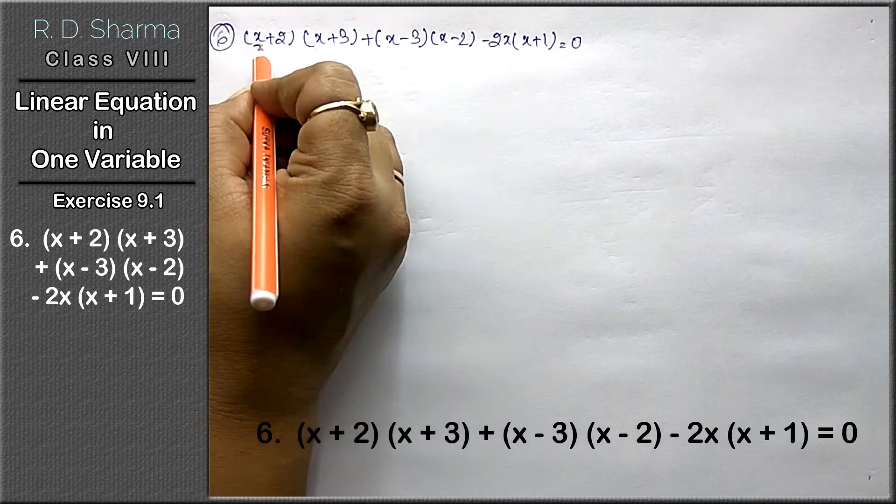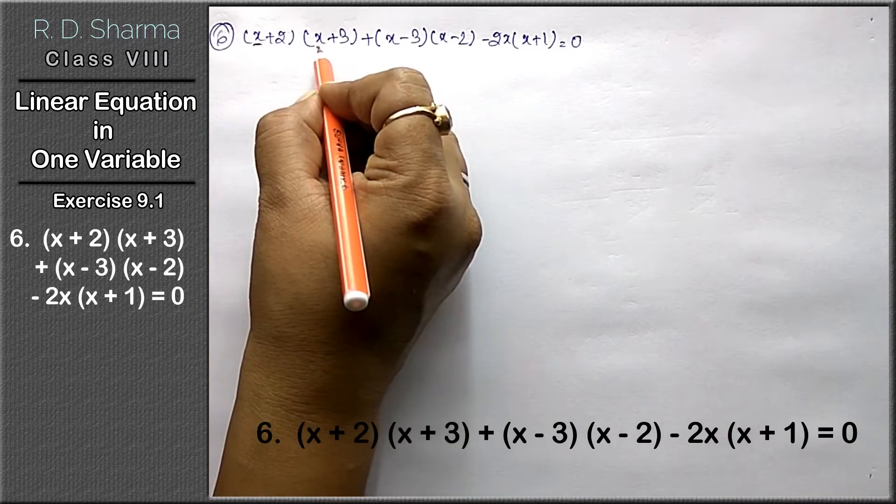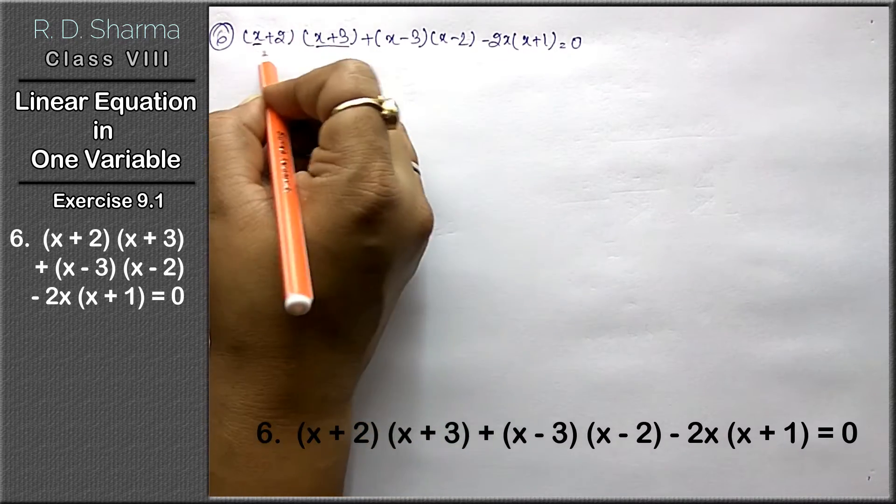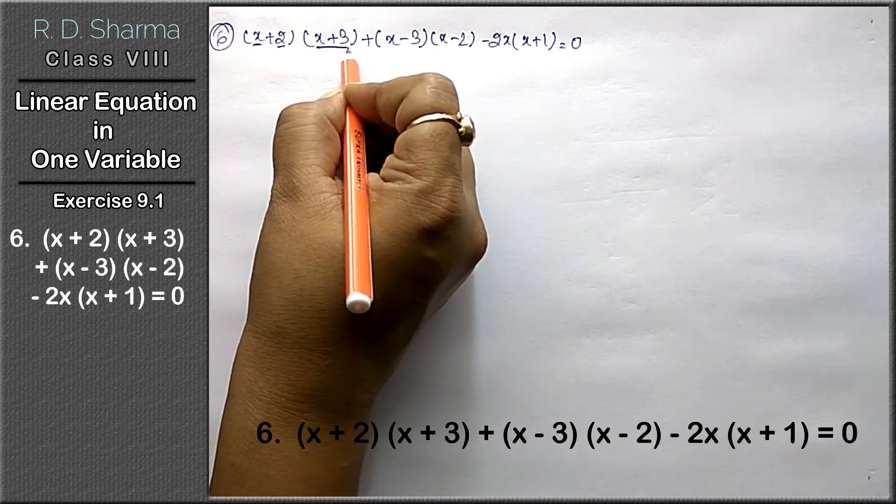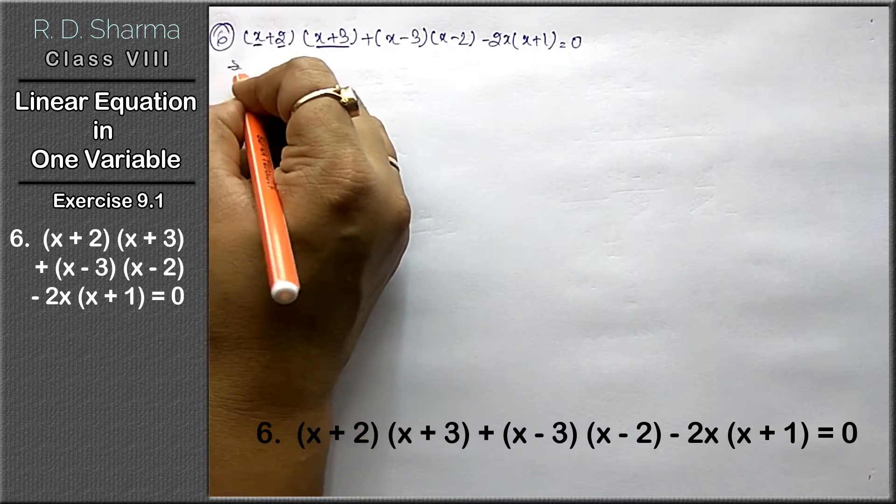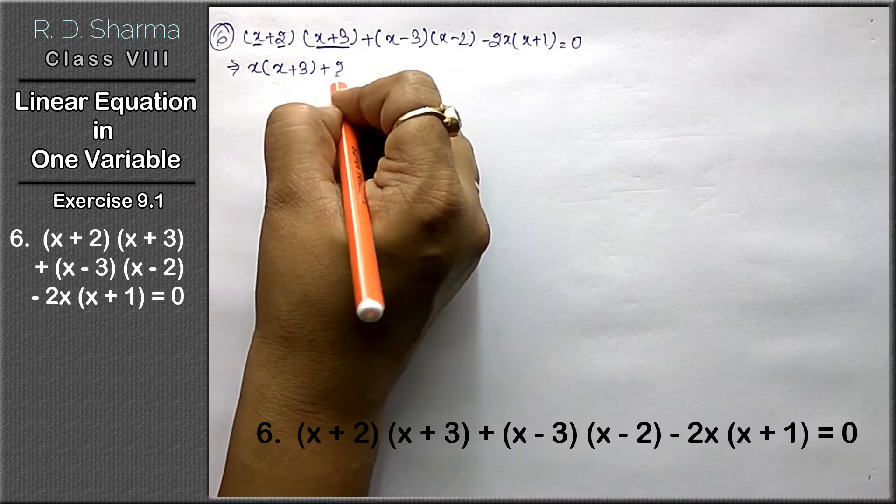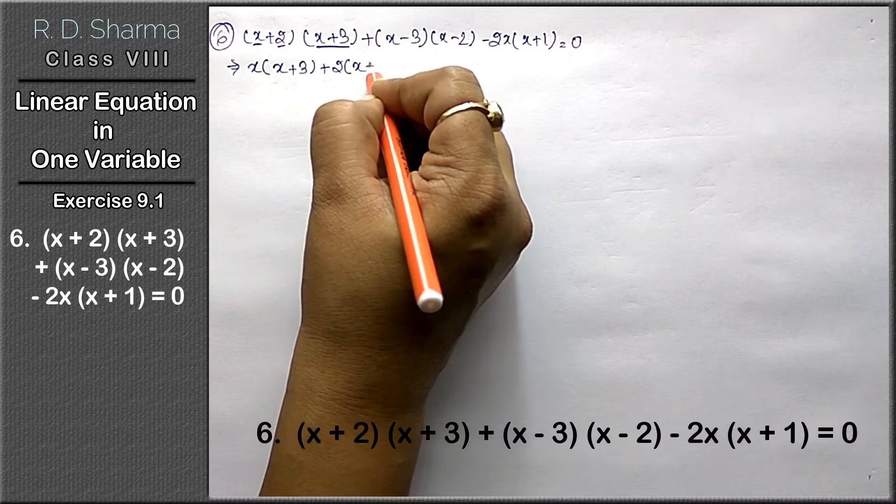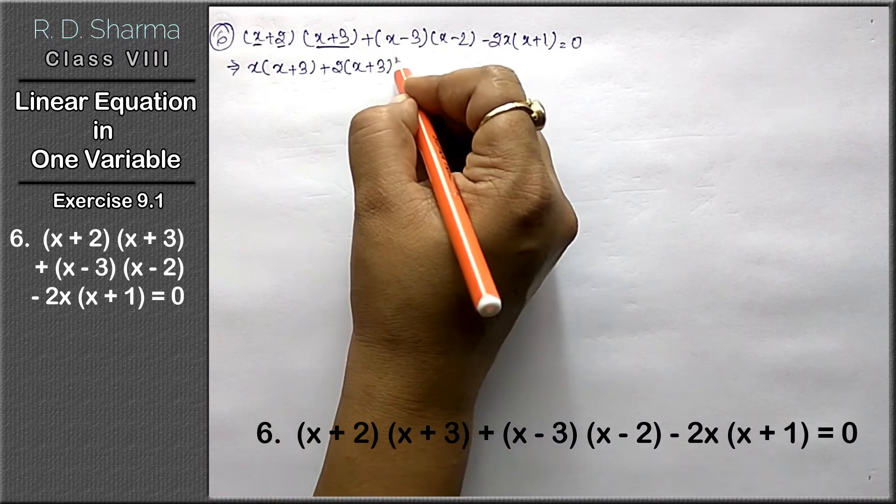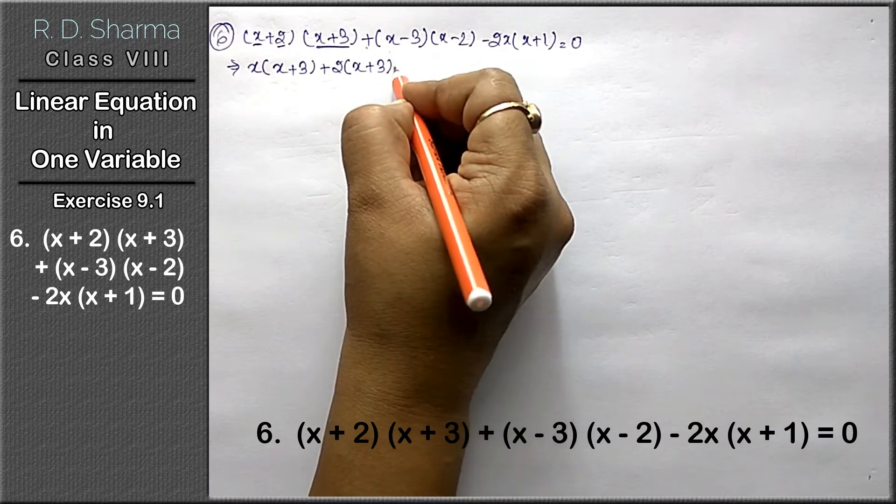In this case, x multiplies throughout the bracket, then 2 multiplies throughout the bracket. So x multiplies throughout the bracket, then plus 2 multiplies into x plus 3. The plus sign remains here.